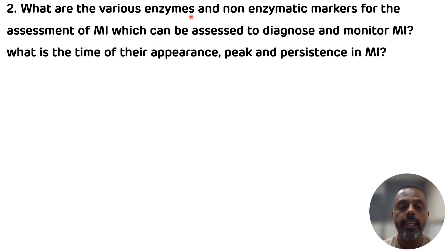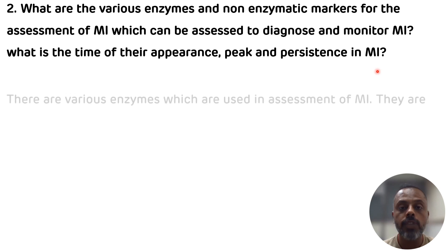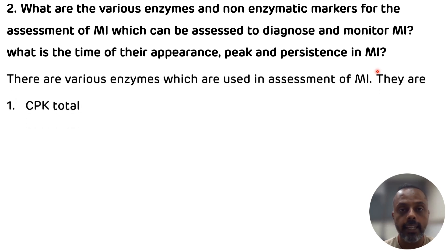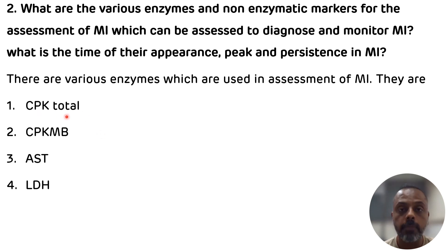The second question is: what are the various enzymatic and non-enzymatic markers for the assessment of MI? The enzymes which can be used for diagnosis are: total CK (creatine kinase), CPK-MB, lactate dehydrogenase, and aspartate aminotransferase. Among these four, CPK-MB is the marker routinely used for diagnosis of MI. The other three are not specific for MI because CPK-Total is also elevated in muscular dystrophy, cerebrovascular accidents, crush injury, or fracture.